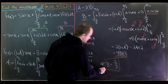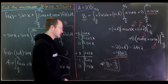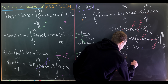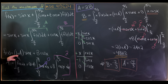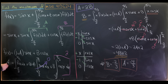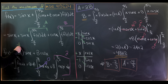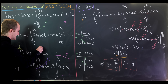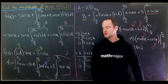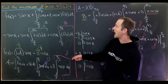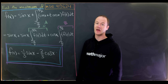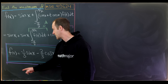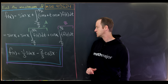If B is negative 2 thirds, then A equals 2B, so A is negative 4 over 3. That allows us to write a nice explicit formula for f of x. With A equal to negative 4 over 3, we have 1 plus A equal to negative 1 third, and B is negative 2 thirds. So this crazy recursive definition boils down to f of x equals negative 1 third sine of x minus 2 thirds cosine of x.